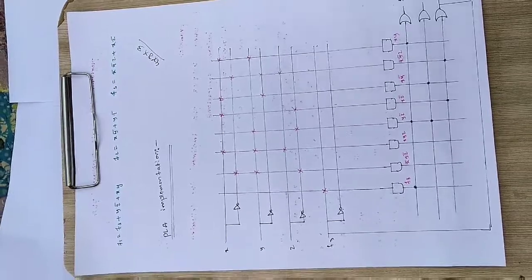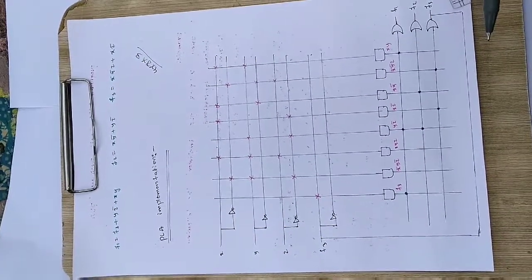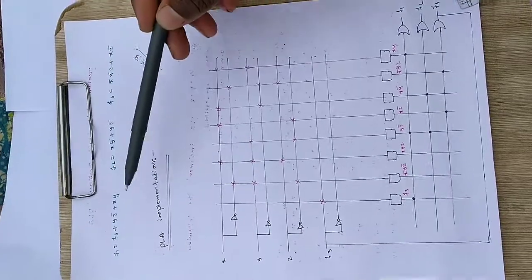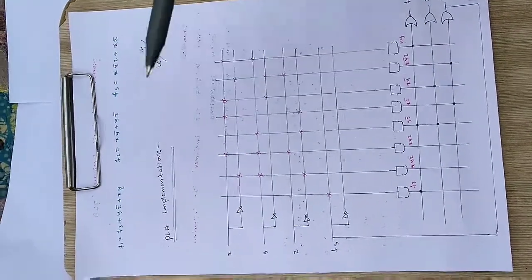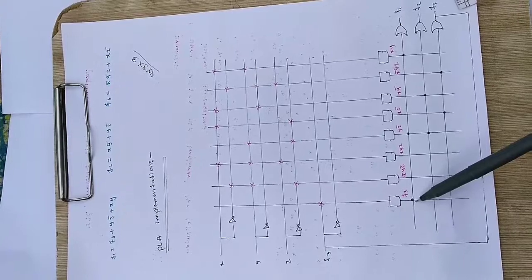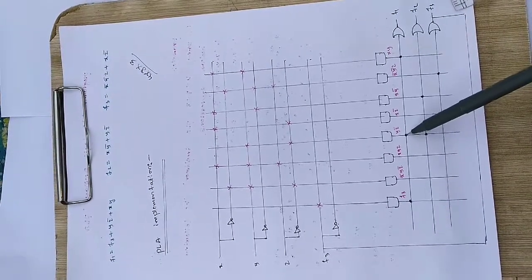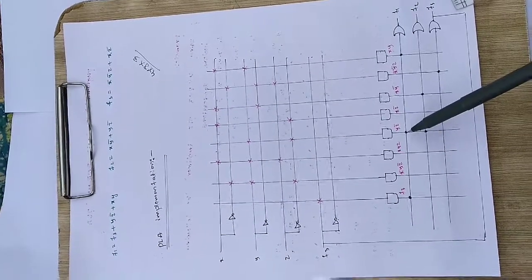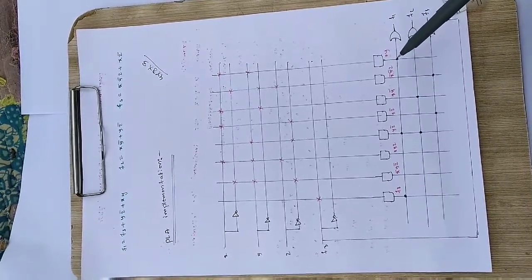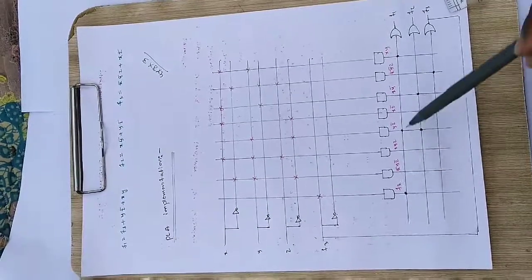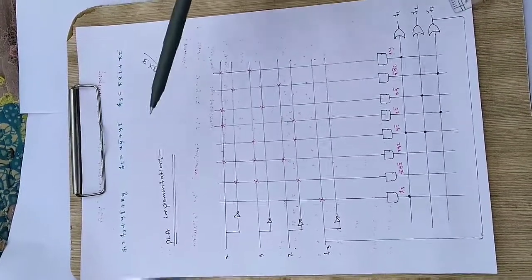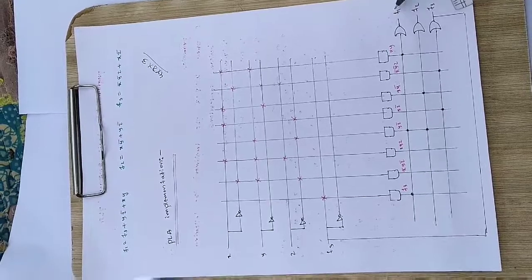For F1, the output equation is F3 + YZ̄ + XY. The first input to the OR gate is F3, so we make a connection at F3. Then YZ̄ is available from its AND gate — we solder there. Then XY — we take that connection as well. When these three terms are added together they give the sum-of-products form for F1. So F1 is the output of this OR gate.